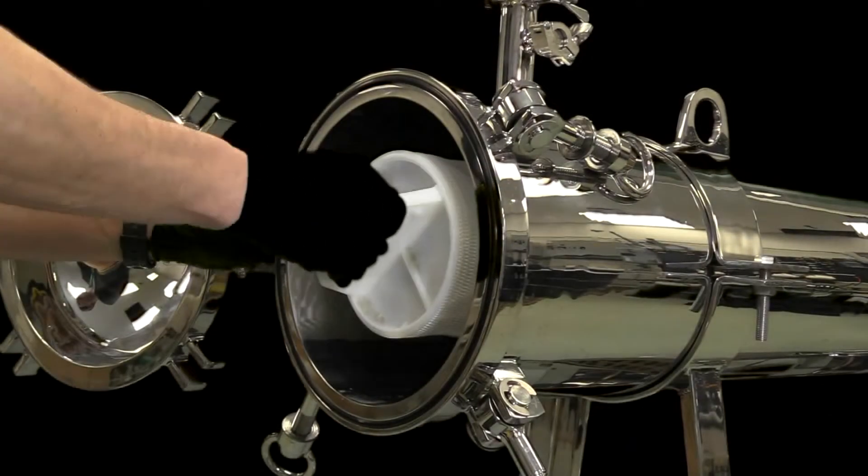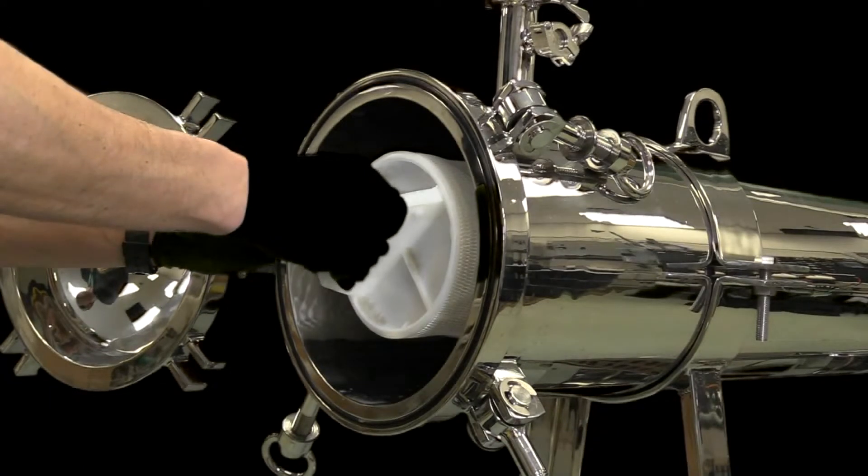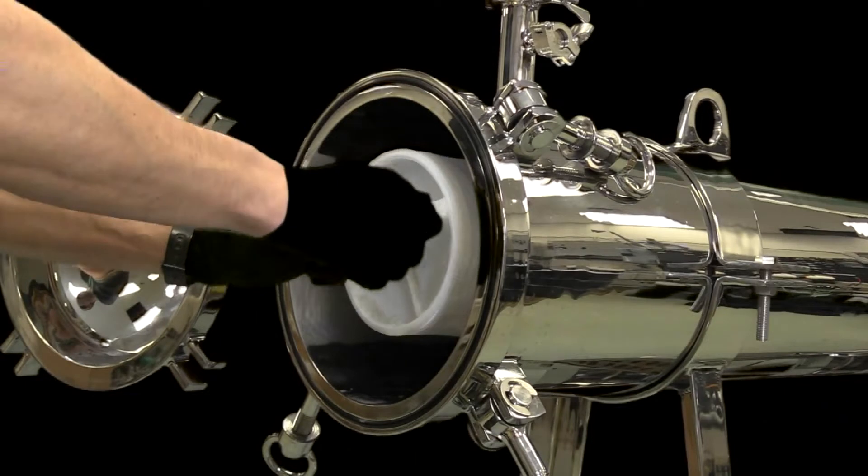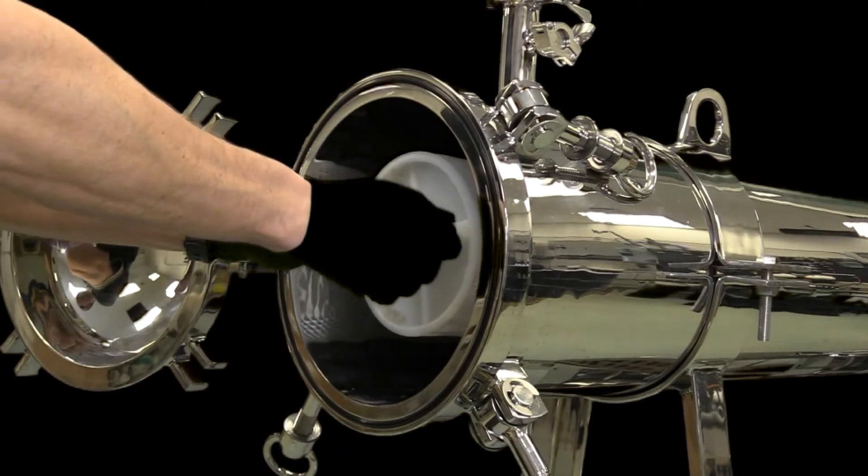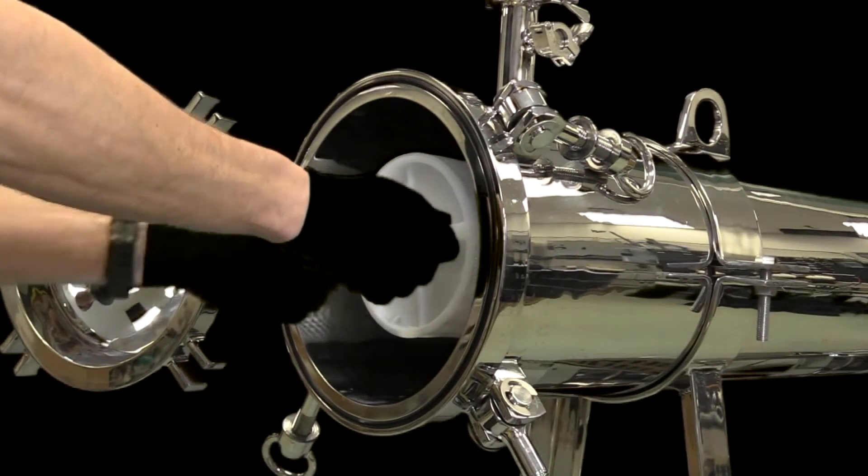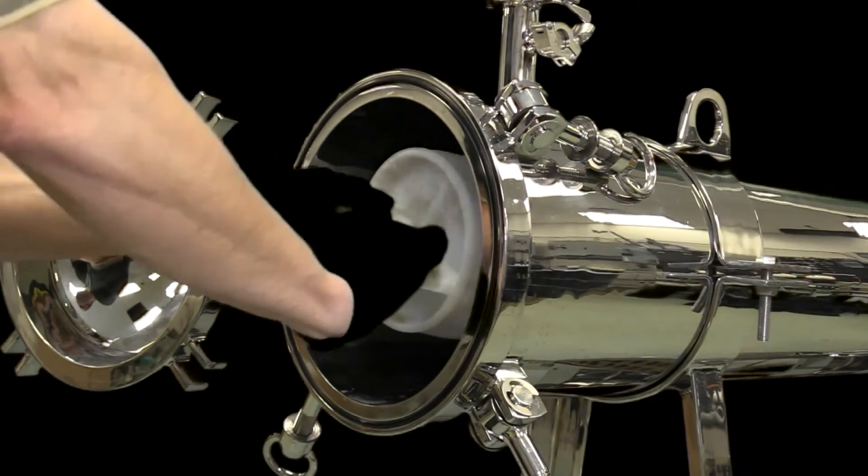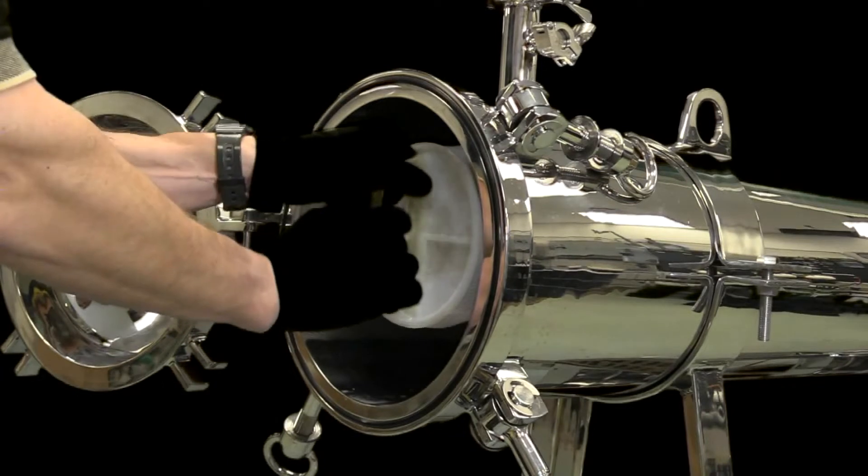Then carefully guide the filter over the support post and into the high-flow housing. A positive stop will be reached. Push forward lightly while simultaneously turning the filter in a clockwise direction. The filter will then insert further and reach another positive stop. Stop pushing forward and simply turn in a clockwise direction until it is not possible to turn the filter further.